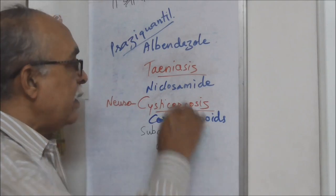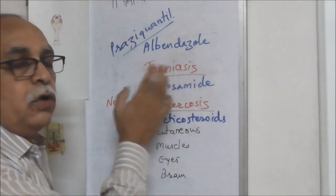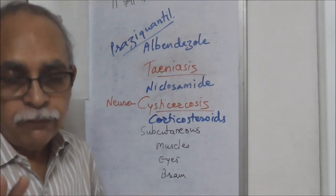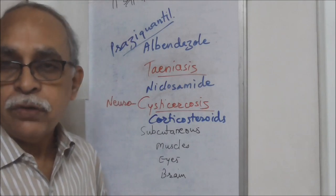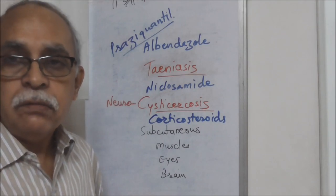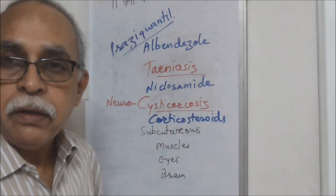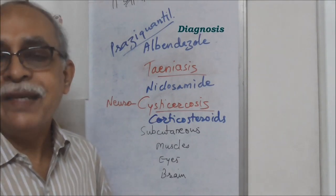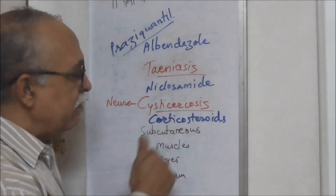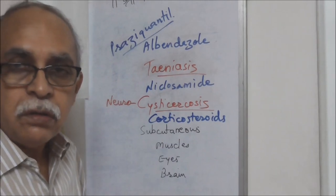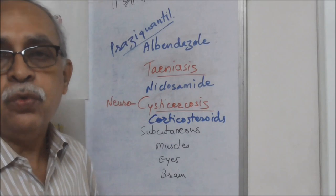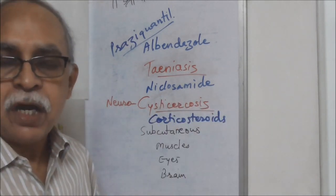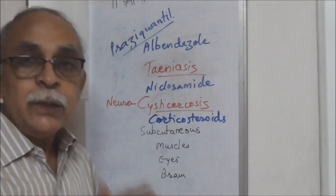Whether it is taeniasis, cysticercosis, or neurocysticercosis, the disorder is completely treatable — of course, timely diagnosis is required. However, diagnosis may not happen immediately because taeniasis can remain in the intestine for a very long span without causing any symptoms. Similarly for cysticercosis. Neurocysticercosis generally leads to some primary indications, so diagnosis could be done and treatment could start.